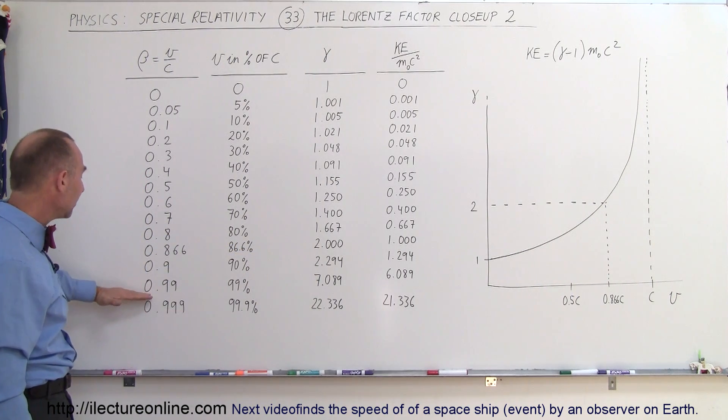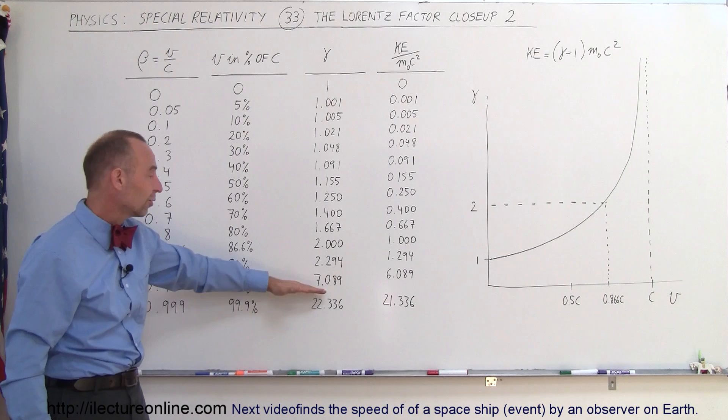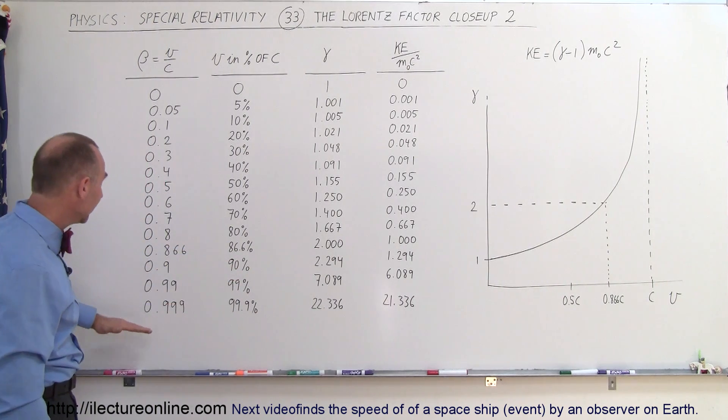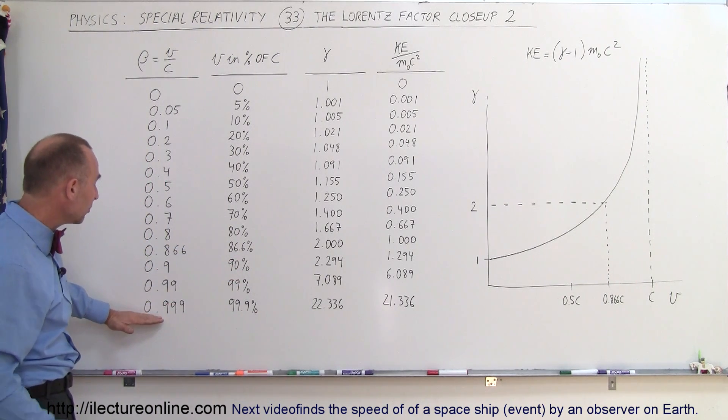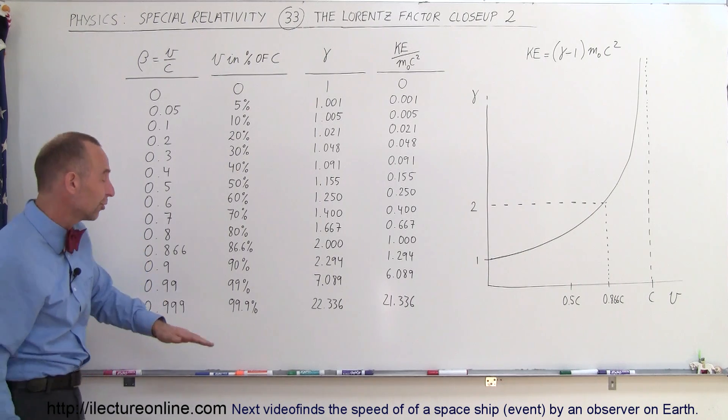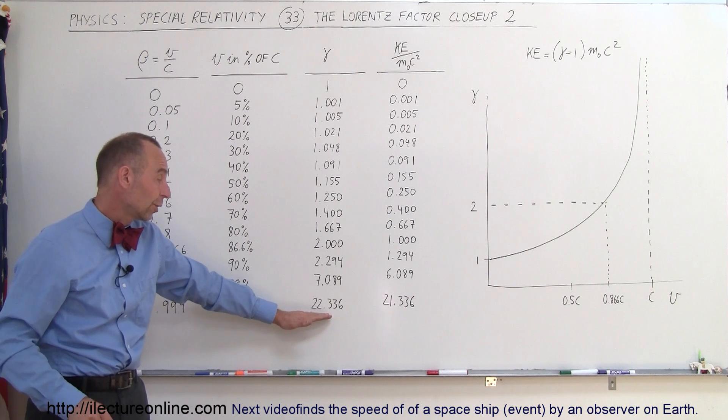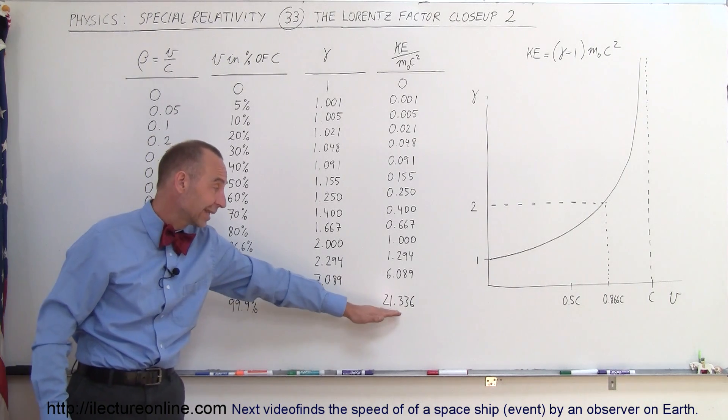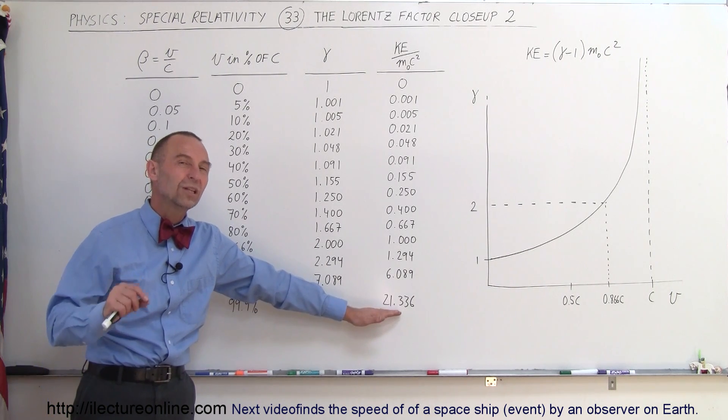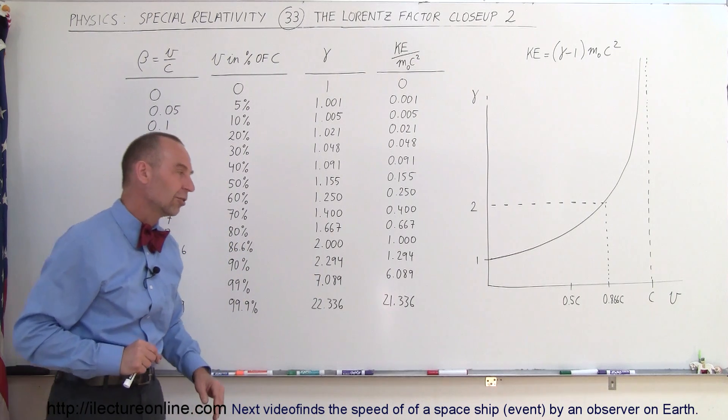If we get up to 99% of the speed of light, the Lorentz Factor is now a little over 7. And if we move at 99.9% of the speed of light, not us per se, but any particle, you can see the Lorentz Factor becomes quite large, 22.336, which means the kinetic energy is now more than 21 times the rest mass energy.